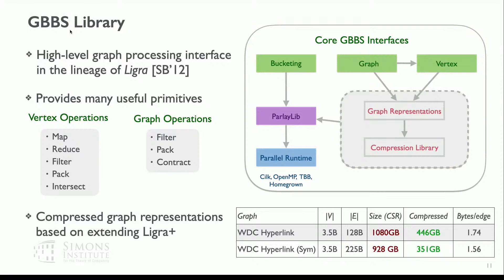Relevant to the second part of this talk are compressed representations in GBBS. We take the adjacency lists of the graph and compress them using delta encoding — we sort the neighbor list of a vertex, then store the differences between consecutive IDs. These differences are typically very small and can be compressed using a byte code, requiring about 1.7 bytes per edge on average. Instead of requiring about a terabyte of memory, in the static format you can store the graph in between 300 to 400 gigabytes.